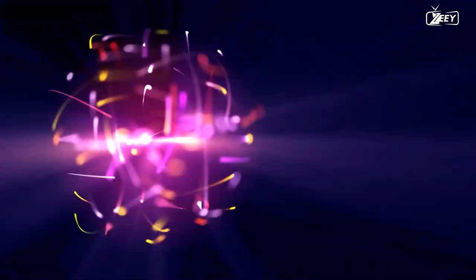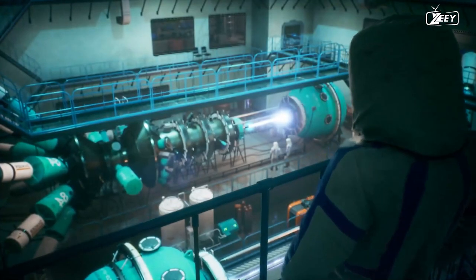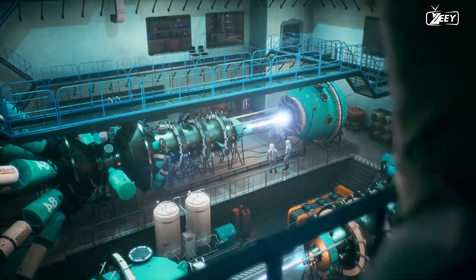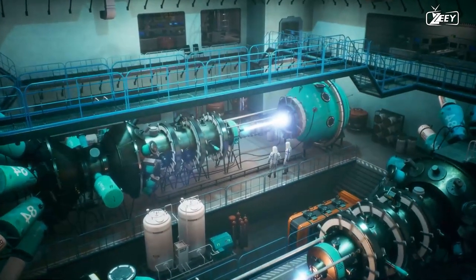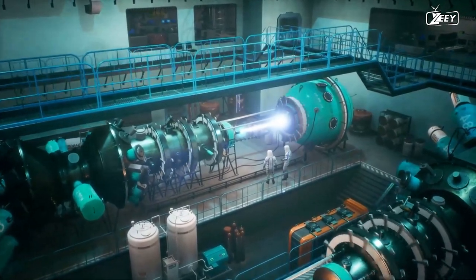Collisions between proton beams happen at four different spots along the ring. When the two beams collide, the protons break apart and hundreds of new particles are created. Scientists built massive detectors at these locations of collision to detect and identify them, as well as to learn new things about nature.